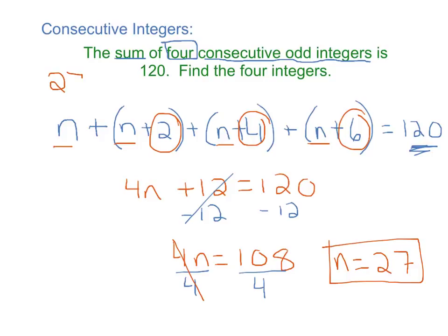So if this one is 27, our next one is 27 plus 2, which is 29. And then it would be 27 plus 4, which is 31. And 27 plus 6, whoops, I meant to write 31. And then 27 plus 6 is 33. So these are consecutive odd integers.